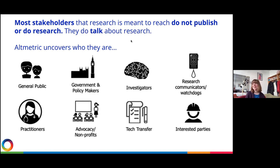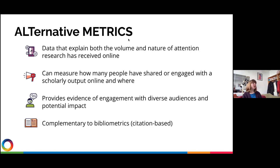As an example: when COVID-19 first came out, most people talking about the research were practitioners — GPs and nurses looking at how to help patients. By 2022, most people talking about COVID-19 research are unfortunately anti-vaxxers. So altmetrics tracks those whole conversations so you can find them in the Explorer. Altmetrics are complementary to bibliometrics such as journal impact factor and h-index — not trying to overtake them, just giving extra information about the impact your work is having.